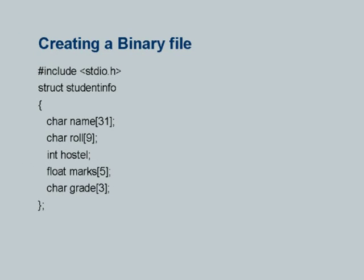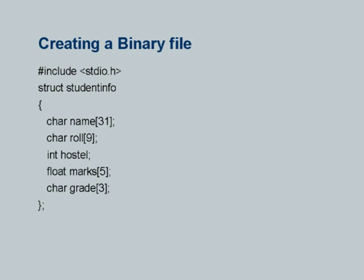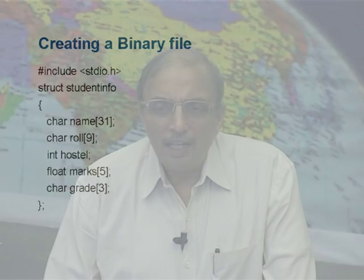So in order to create a binary file, I first define a record that will go into the binary file — not one record, but as many records as I have students. I define that in a separate header file called, let's say, studentinfo.h, or I can include it in my main program. This is just to illustrate that the C compiler is flexible enough — you need not have the entire source code in a single file. You can have header files and even function files separately.